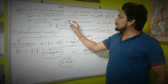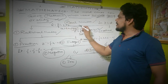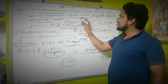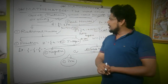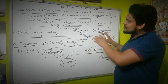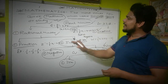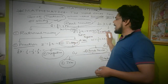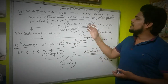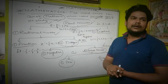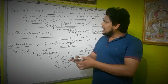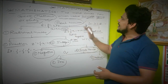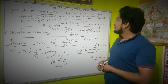The next topic is real numbers. The collection of all the rational numbers and the irrational numbers together is called the real numbers.